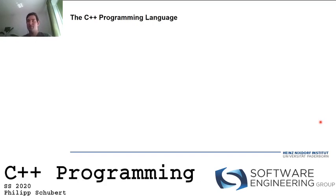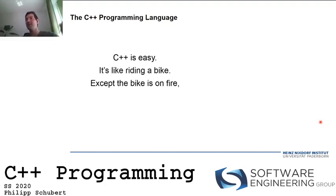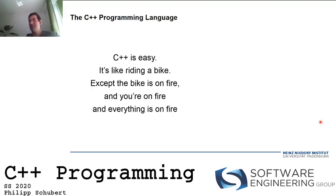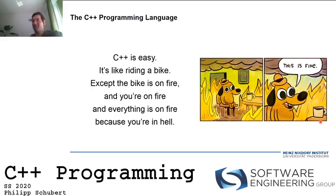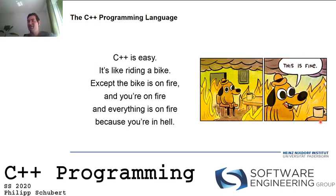The C++ programming language is known to be a very easy language. In fact, so easy that there exists the following saying: C++ is easy — it's like riding a bike, really, except the bike is on fire, you are on fire too, and everything is on fire because you are in hell. It's a bit of a joke, but surely C++ is not the easiest language to learn — we'll try to make good progress.